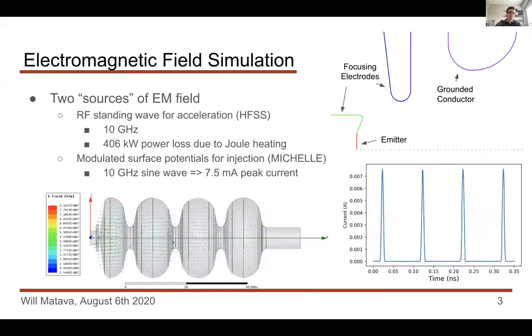There's two sources of the EM field we need to worry about simulating. The first is an RF standing wave, which we actually use to accelerate the particles. This was done in HFSS. Here I have an animation of the electric field, and you'll note that in successive cavities, the electric field actually opposes, or it's in opposite directions. The idea is that an electron will be emitted here, enters this cavity, and can be accelerated. By the time it reaches the next cavity, the electric field in this cavity has flopped over in the other direction, and acceleration can occur here.